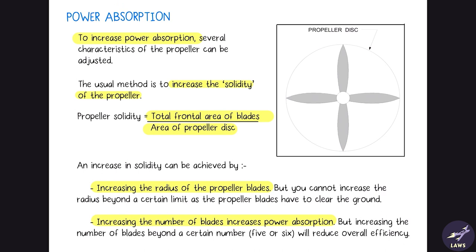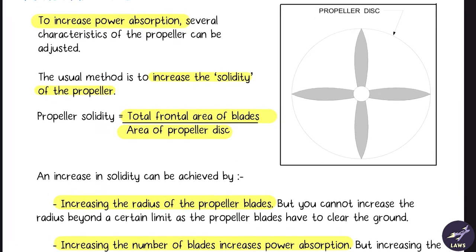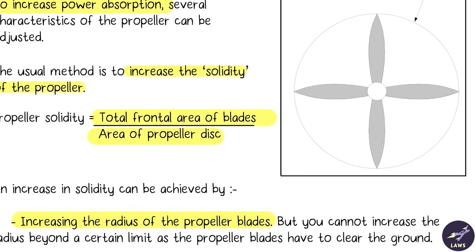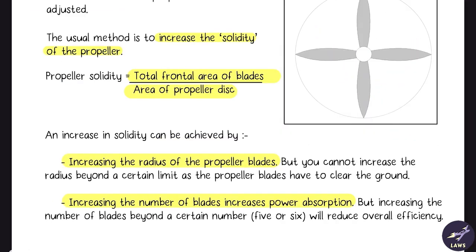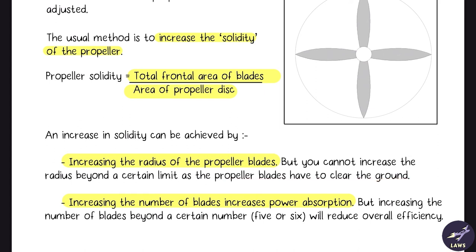Power absorption: to increase power absorption, the usual method is to increase the solidity of the propeller — given by total frontal area of the blades divided by the area of the propeller disc. You can increase the blade radius (limited by ground clearance) or add more blades. However, increasing the number of blades beyond generally 5 or 6 will reduce overall efficiency, so there must be a balance between the two.